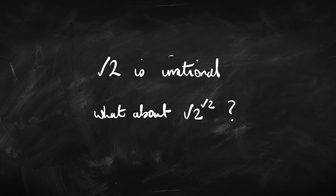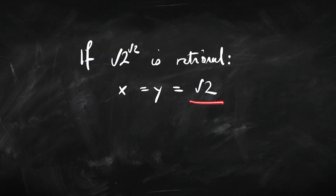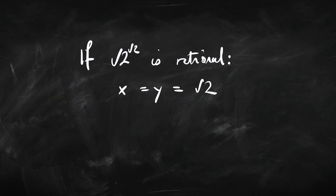An irrational number is one that you can't express as a fraction. The Greeks, who liked everything to be rational, didn't like irrational numbers, but they discovered that root 2 is irrational. What about root 2 to the power of root 2? It's actually not easy to work out, but it's either going to be rational or irrational. If root 2 to the power of root 2 is rational, then we've basically got our answer — we can take x and y to both be root 2, and root 2 to the power of root 2 is our rational number.